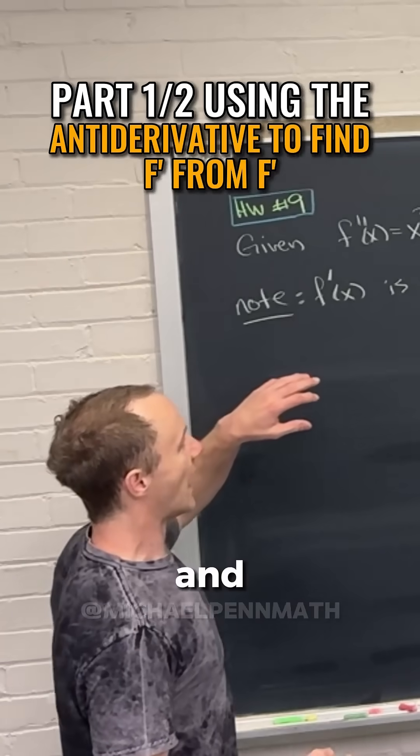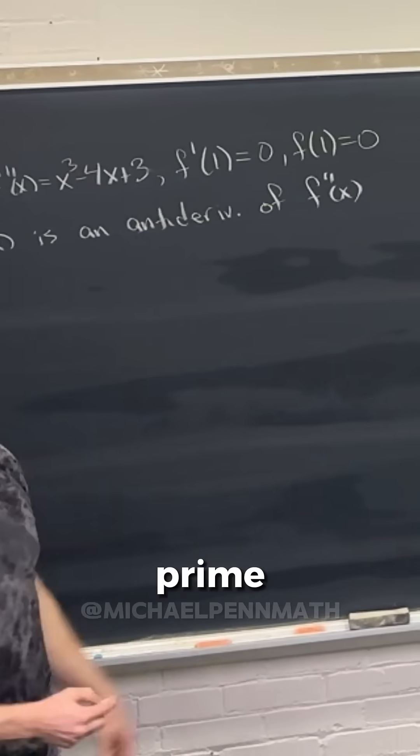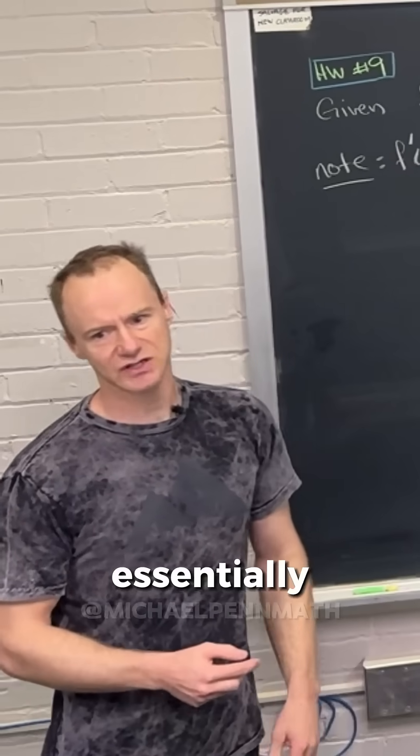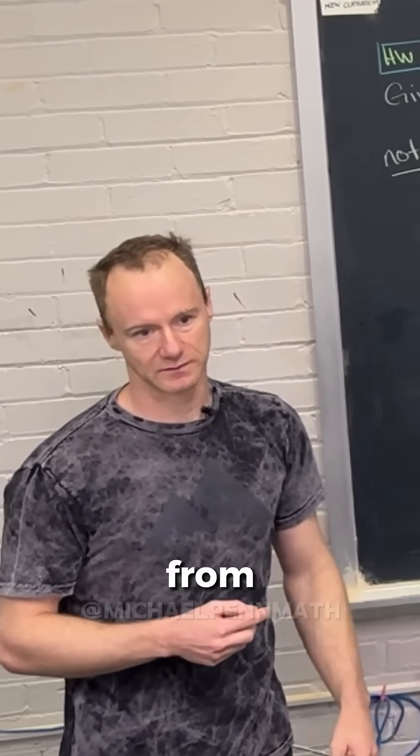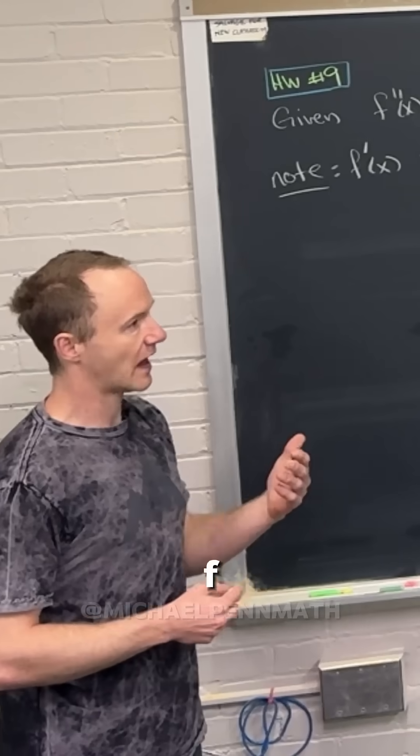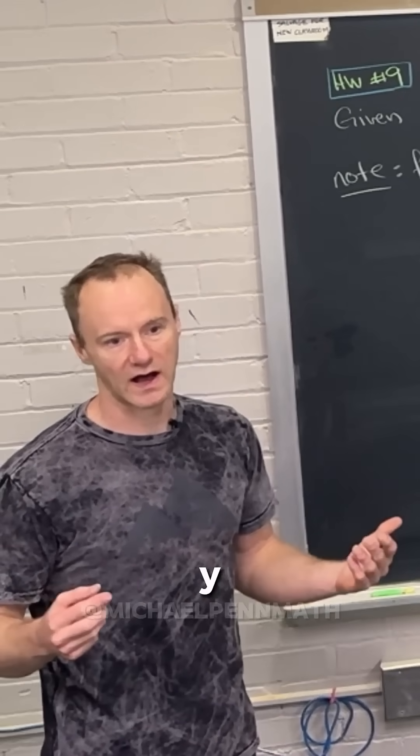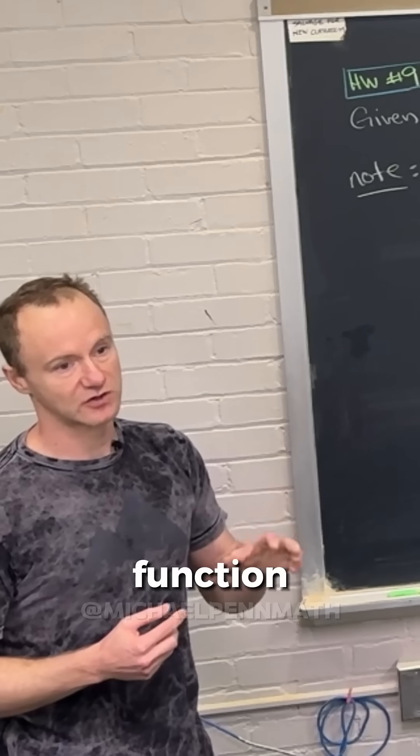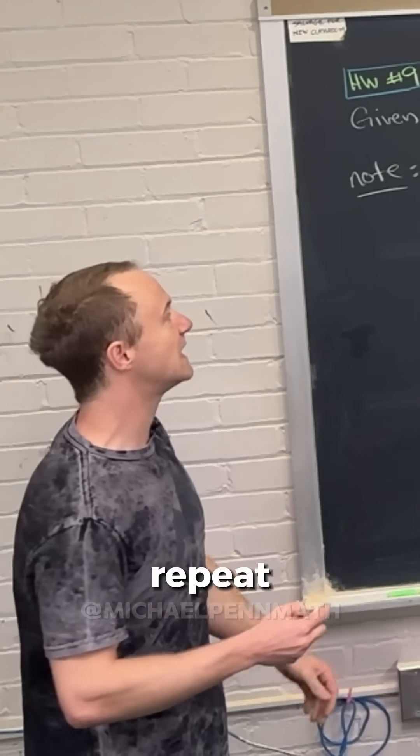Since we're given f double prime and a value of f prime, we can essentially do the last couple of problems from yesterday where f prime is playing the role of what we call y or whatever. That'll give us a function for f prime, and then we can repeat the process.